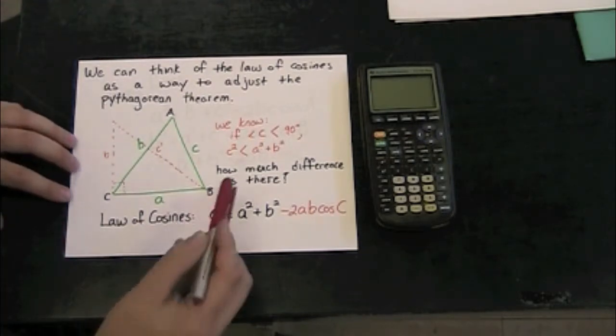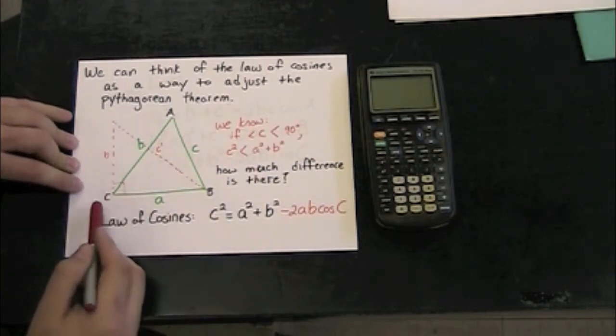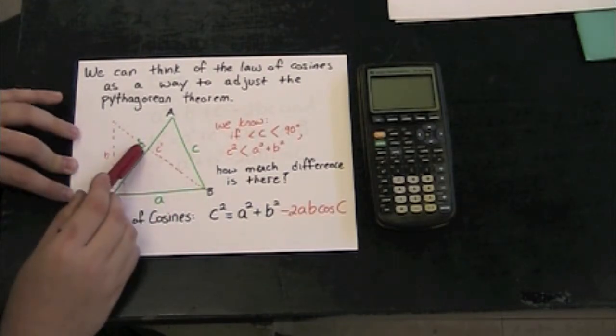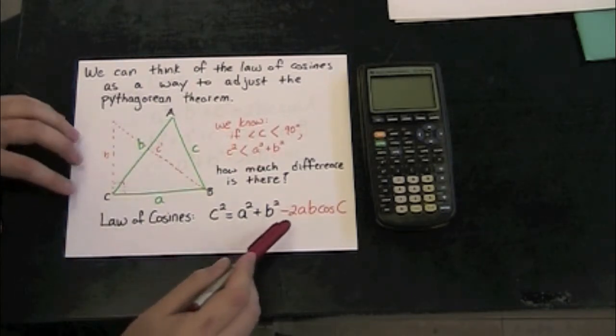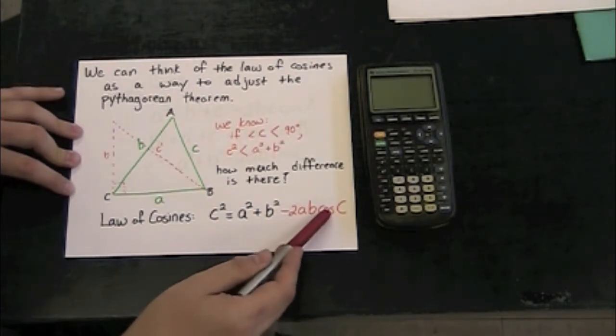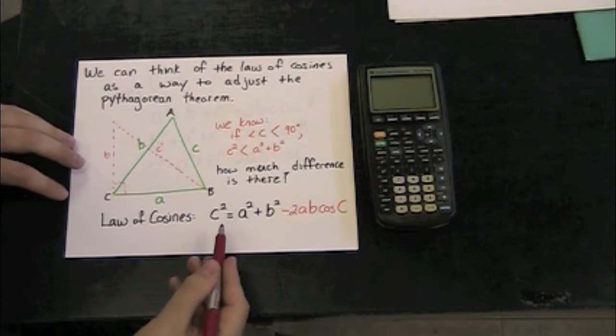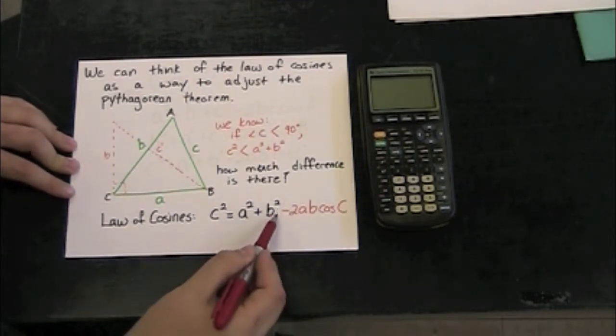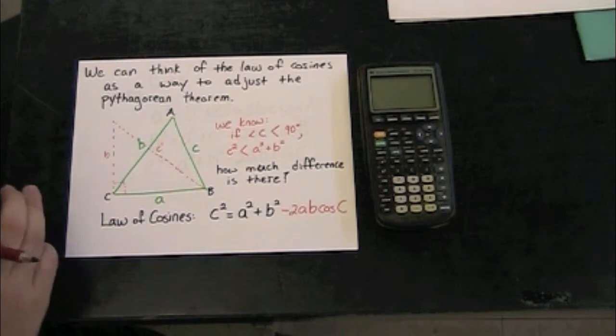We know if angle C is less than 90, that c², that is side c squared, has to be less than the sum of a² and b². And the amount of difference that there is is going to be 2ab, that's side lengths a and b, times the cosine of angle C. So the Pythagorean theorem, written as c² = a² + b², is adjusted, subtracted by 2 times ab cosine C to arrive at the law of cosines.